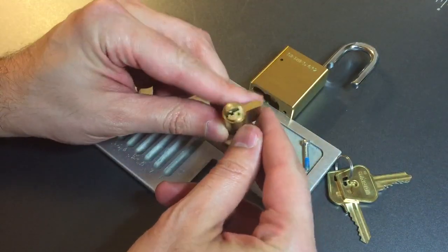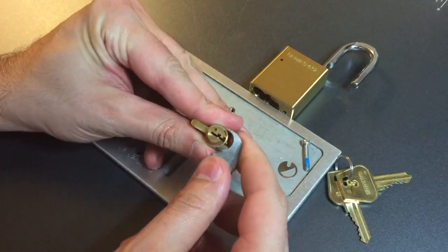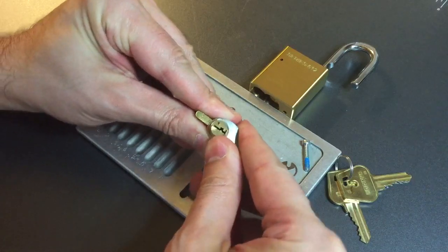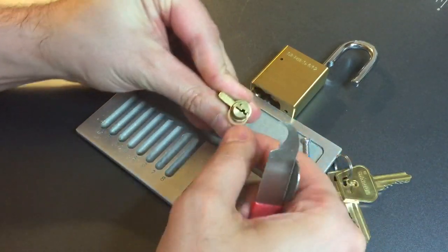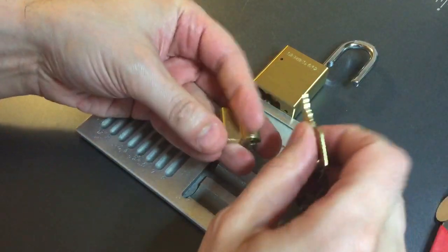So to get this core apart we need to remove a little c-clip there. Okay now all we need is a key and a follower.